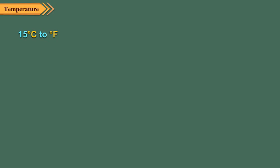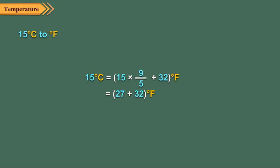For example, to convert 15 degrees Celsius to degrees Fahrenheit, we first multiply 15 by 9/5 to get 27. Then we add 32 to get the required temperature as 59 degrees Fahrenheit.